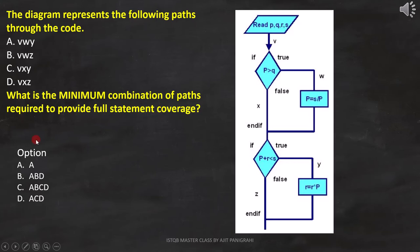And A, B, C, and D represent different path combinations. As per the question, we have to find out with which combination we can cover full statement coverage.